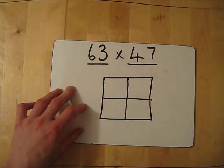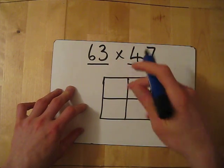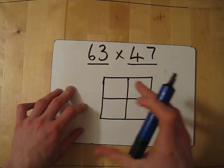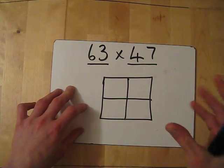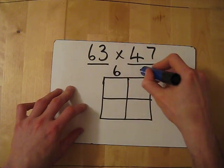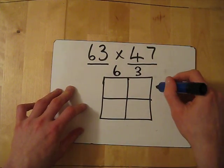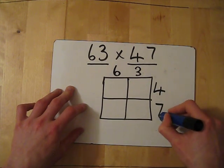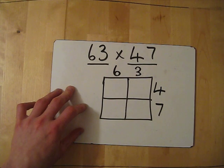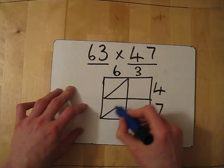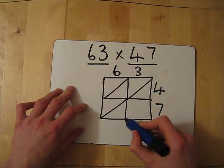Now, at the top of each of these sections, I just write the whole number. Sorry, the digits from the number. I don't write the 60 and the 3. I don't partition it like that. I just write a 6 and a 3 here. And obviously down the side, this side. I'm going to write a 4 and a 7. So, we're nearly there. Now, what I also need to do is I need to split each box in half diagonally, going the same way.